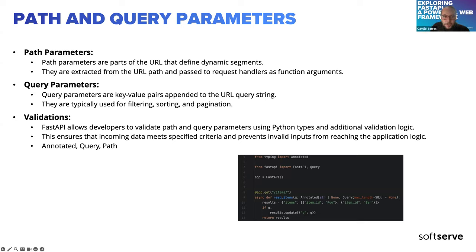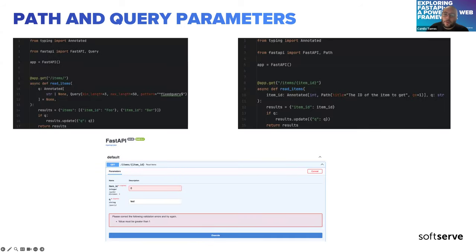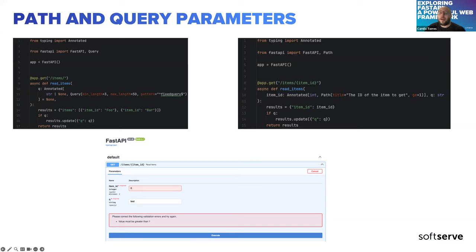Many FastAPI features are based on standard Python. For example, you can use predefined value validations using Python's Enum class. If you have a path operation that receives a path parameter and you want it to have only three valid values, you can use the Enum class. This is a really good feature — you don't have to worry about validations for fixed possible parameter values.